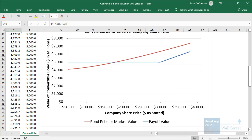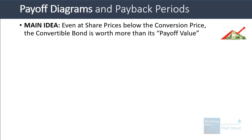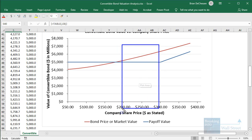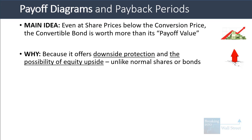There are a couple of key points from this diagram. The first is that even when the share price is below the conversion price — even below $300 per share — the convertible bond's market value is actually above its payoff value. The reason this happens is because it offers downside protection and also the possibility of equity upside. Unlike normal shares or bonds, it offers the best of both worlds, which is why it's worth more than a traditional $5 billion bond would be.